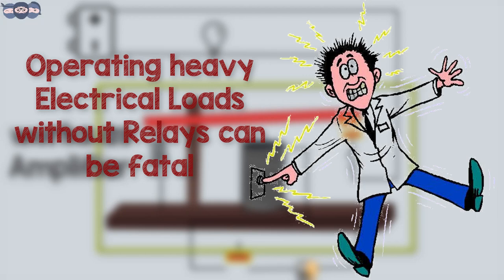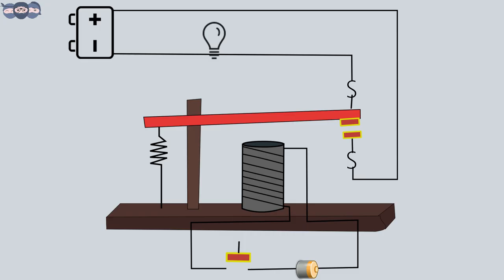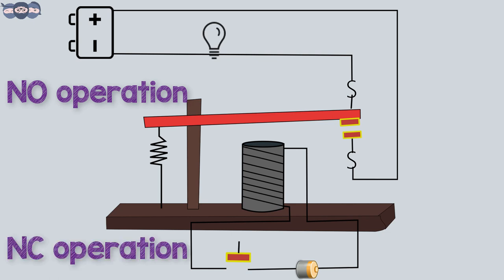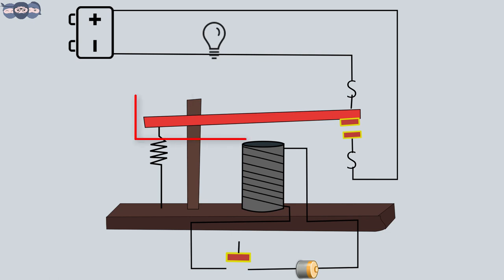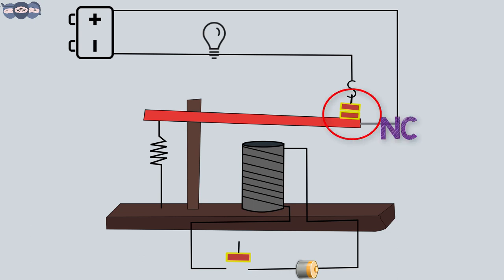When you use relays, you have to decide whether it should work as normally open or normally closed. Normally open or normally closed relays depend upon the configuration of the armature. In the example that we have shown, this is an example of a normally open relay. The normally closed relay looks this way. The armature is placed in such a way that the load circuit is completed when the contact switch is turned off.